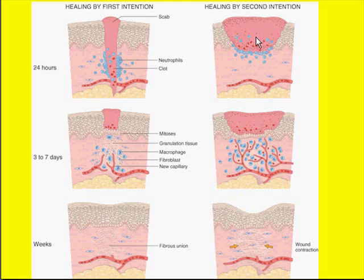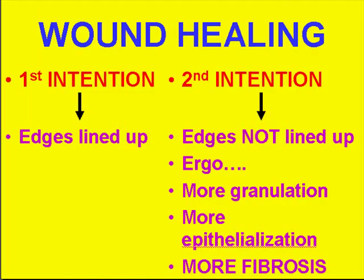If you had a wound like a dog bite or somebody just gouged out tissue traumatically, there's significant disruption of the ECM, and therefore that is much more likely to heal with scarring. In first intention healing, the edges of the wound are lined up. In second intention wound healing, the edges are not lined up, and therefore there's more granulation tissue, more neovascularization, more organizing inflammation, more epithelialization, and more fibrosis — resulting in a lot more scarring.